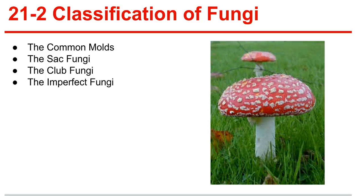Section 21-2, classification of fungi. The kingdom Fungi has over 100,000 species, which are classified according to their structure and method of reproduction. The common molds — the familiar molds that grow on meat, cheese, and bread — are members of the phylum Zygomycota, also called zygomycetes. Zygomycetes have life cycles that include a zygospore, which is a resting spore that contains zygotes formed during the sexual phase of the mold's life cycle.